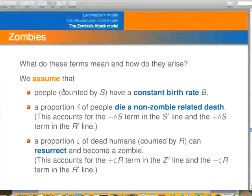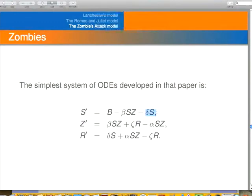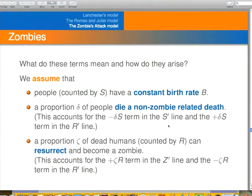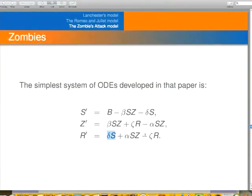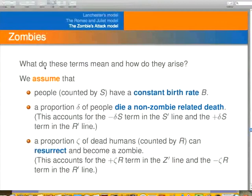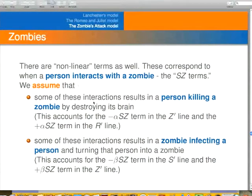So different possibilities there. We have this differential equation that describes how these populations change. And here's how they change. I'll just explain each of those terms. First, we're going to assume that people have a constant birth rate B. That's this term right here. And we're also going to assume that some people die just from old age or some other disease, not because zombies bit them. That's this term here. And you can see they get added to this category there. We're also going to assume that some of these zombies are created from dead people by being resurrected. And so if you're one of these zombies that is resurrected from one of these dead people, then you get those terms there.